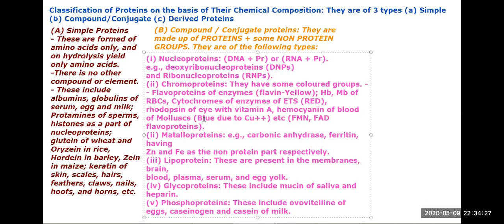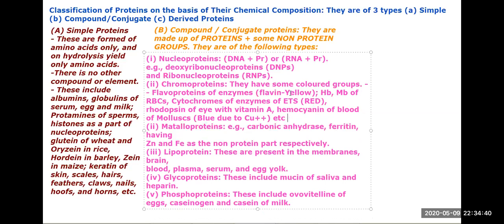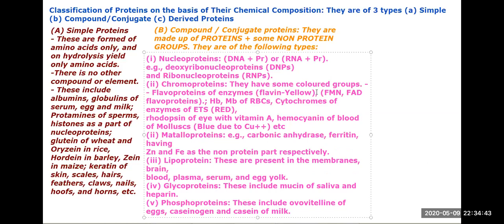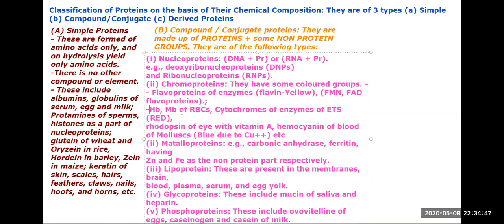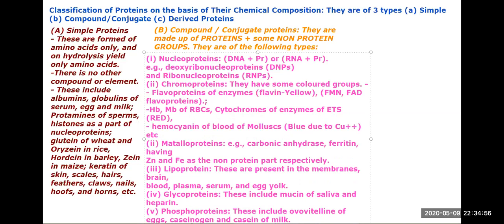To summarize chromoproteins: flavin is yellow, hemoglobin, myoglobin, and cytochrome are red, and hemocyanin is blue.